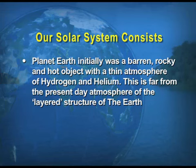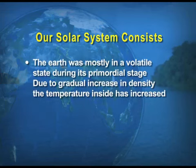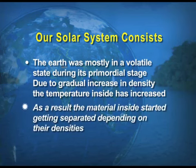When we talk about the evolution of the lithosphere, the Earth was mostly in a volatile stage during its primordial stage. Due to gradual increase in density, the temperature inside decreased and the material inside started getting separated depending on their densities. This allowed heavier materials like iron to sink towards the center of the Earth and lighter ones to move to the surface — which is why we see the differentiation of the Earth in the form of SIAL layers towards the top, then SIMA, and NIFE — the heavier metals — towards the center.